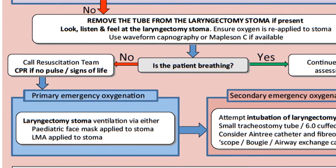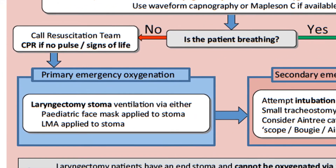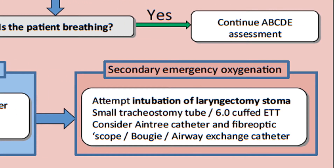The final section of the algorithm deals with emergency oxygenation. This is when you have removed the tracheostomy tube and there are still no signs of breathing. You move to your primary emergency oxygenation strategy: attempt ventilation via the laryngectomy stoma with either a paediatric face mask or LMA. If this doesn't work, then proceed to your secondary emergency oxygenation maneuver, which involves intubation of the laryngectomy stoma using either a small tracheostomy tube or a size 6 cuffed endotracheal tube. You might also want to consider using equipment to aid intubation, such as an Aintree catheter, fibre optic scope, or bougie.